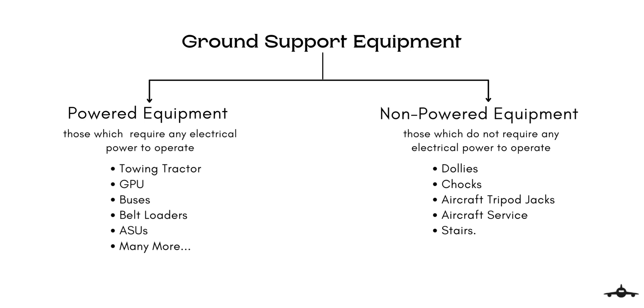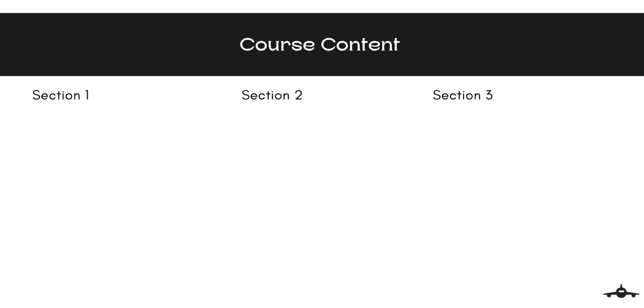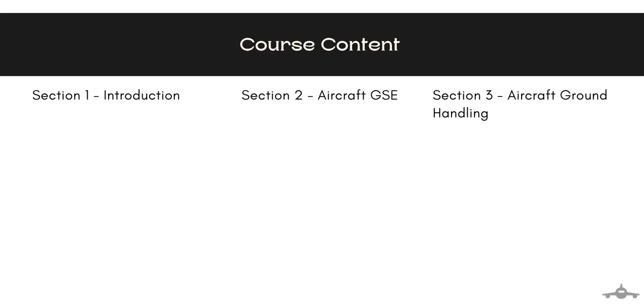We shall discuss each of them in detail with their type, operation, and functions. This course has been divided into three sections: Section 1 — Introduction; Section 2 — Aircraft Ground Support Equipment; and Section 3 — Aircraft Ground Handling.